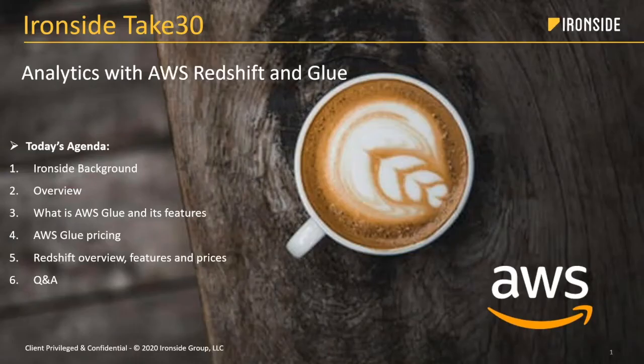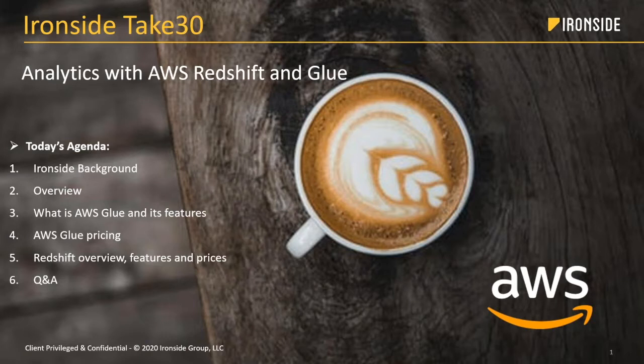Hi, good morning everyone. Welcome to today's Take 30. We're going to be talking about AWS Glue and AWS Redshift today. What we're going to do is go through some quick definitions, do a rundown on features and costs for both, and then we'll end with a Q&A.